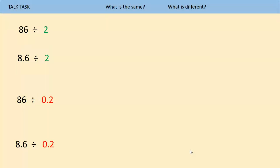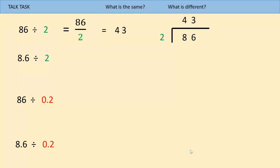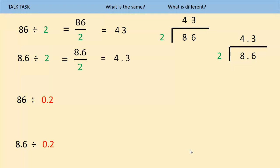Let's look at them one at a time. The first question, 86 divided by 2 — you know how to do this. We can do a calculation and the answer is 43; you can probably do that one in your head. Now let's look at 8.6 divided by 2. We can do exactly the same using our bus stop method — we just have a decimal point. So this time our answer is 4.3. It is ten times smaller than the top question, because 8.6 is ten times smaller than 86.